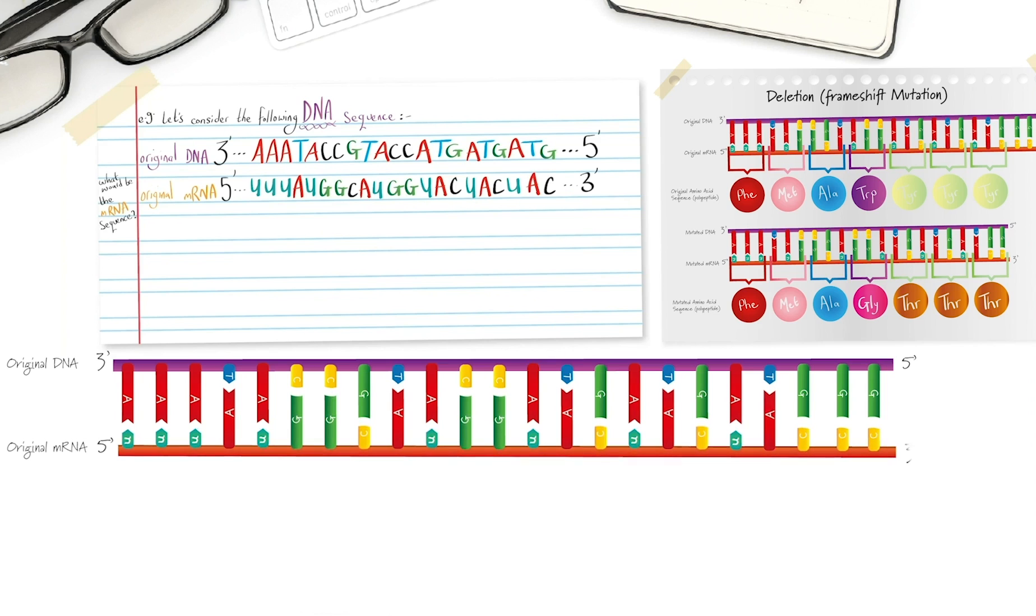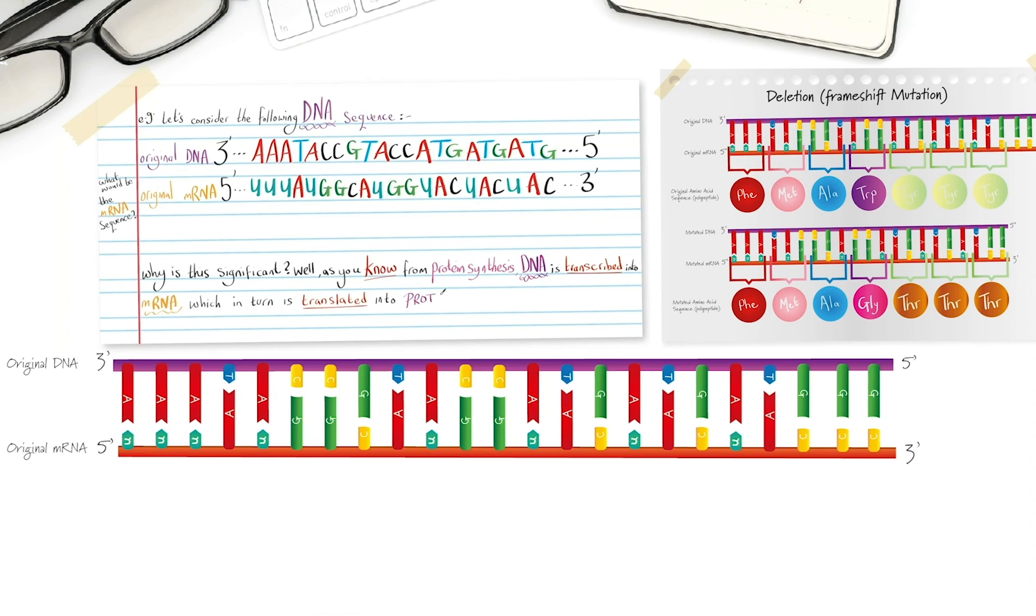Okay, so here we have our messenger RNA. Why is this significant? Well, as you know from protein synthesis, DNA is transcribed into messenger RNA, which in turn is translated into protein, since each codon, those triplets, specify a particular amino acid.